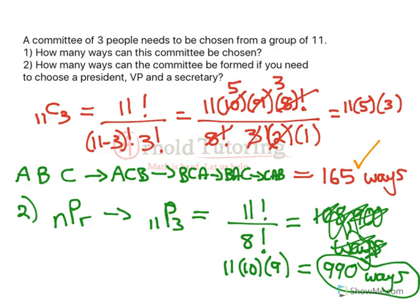That's a quick example of the difference between permutations and combinations. For permutations, order matters. For combinations, it does not.